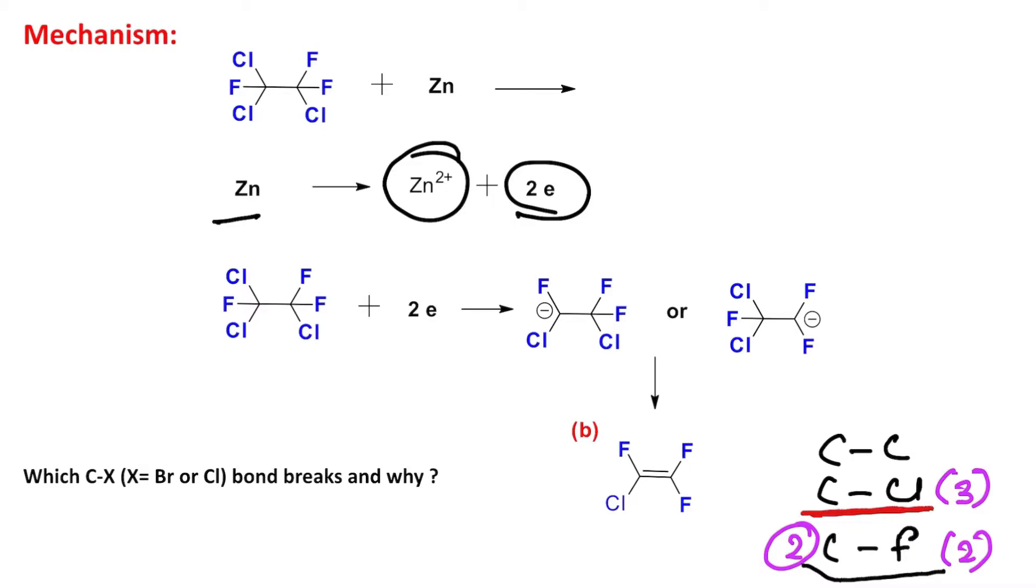Second thing: after reduction you will understand that Cl⁻ will be produced, and this Cl⁻ is a better leaving group. There are two possible chances that these two electrons either reduce this C-Cl bond (the red one) or the blue one.